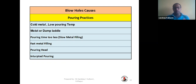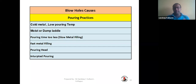In pouring practice, the main reason for blowhole is cold metal — low pouring temperature is a major cause because the gas cannot escape from the mold and remains inside as a cavity, visible after machining. A moist or damp ladle is another cause — the ladle condition must be good. There should be a red-hot ladle with no moisture inside, especially when preparing a new ladle. You have to rinse the ladle with metal at least one or two times so all moisture from the ladle walls is removed.